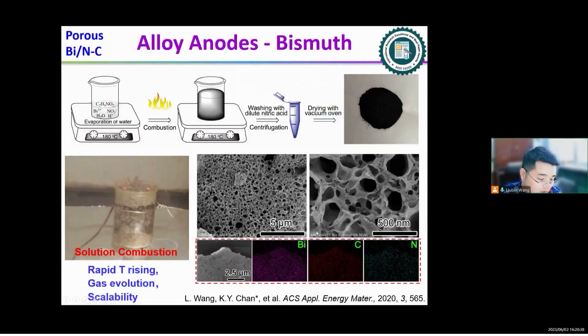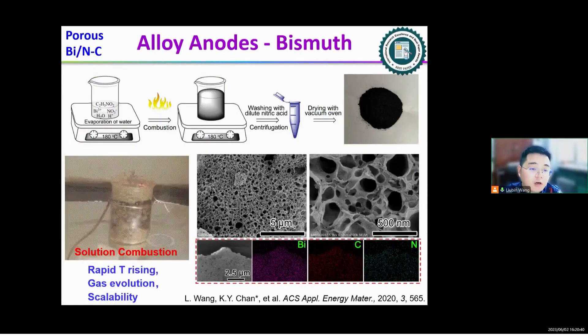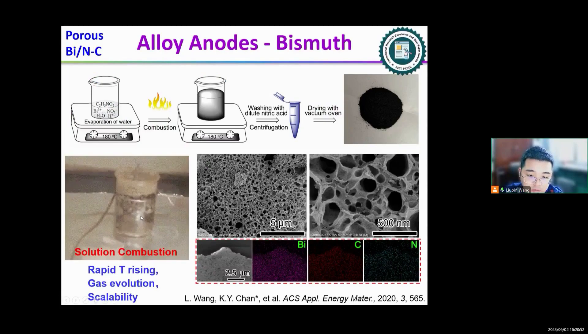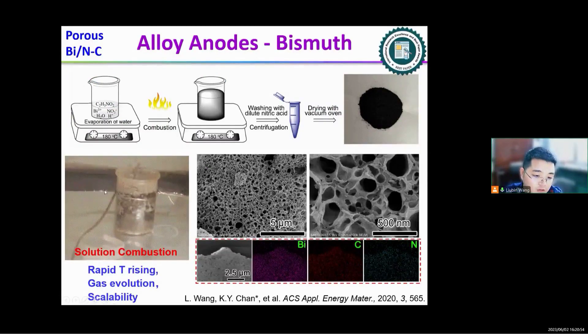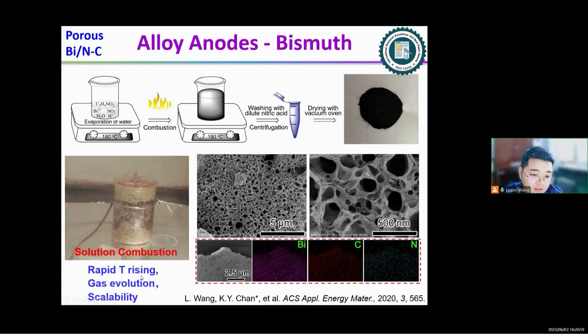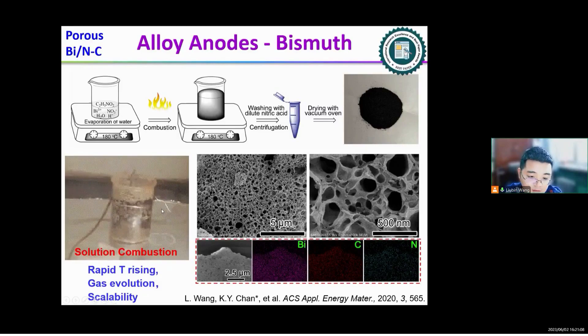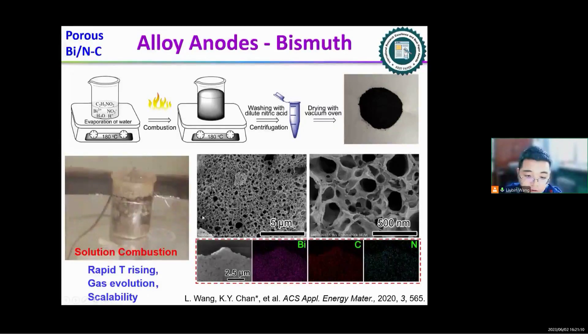Another work is about a porous bismuth-nitrate-doped carbon nanocomposite electrode. In this work, we use a scalable and facile solution combustion method to prepare this material. During the synthesis progress, the temperature is rising rapidly and the amount of gas is evolution. Thus, bismuth 3+ is reduced to pure metallic bismuth, and those organic particles are derived from a porous carbon.